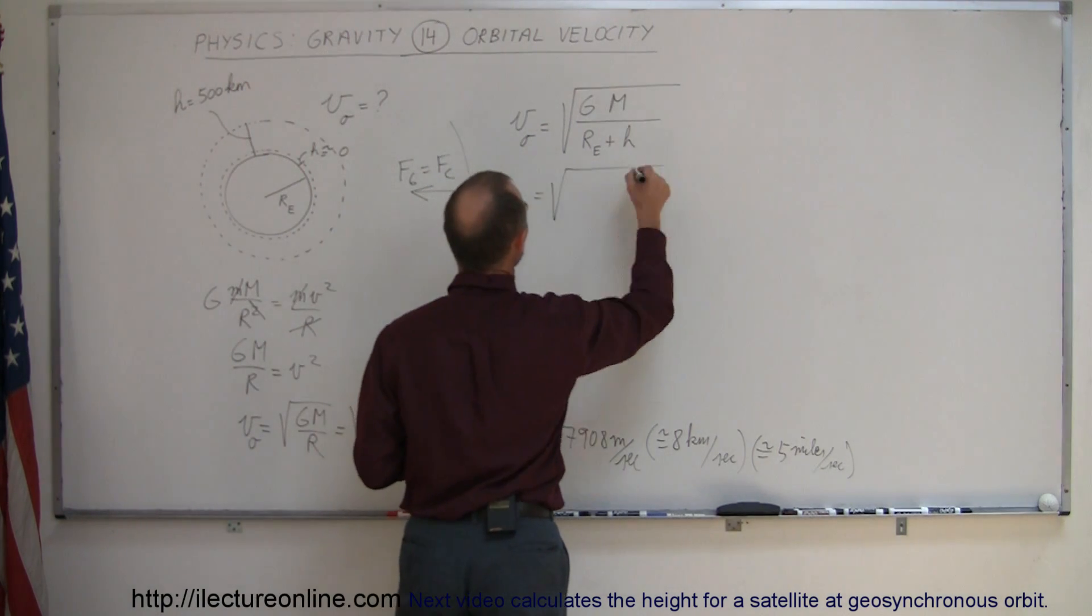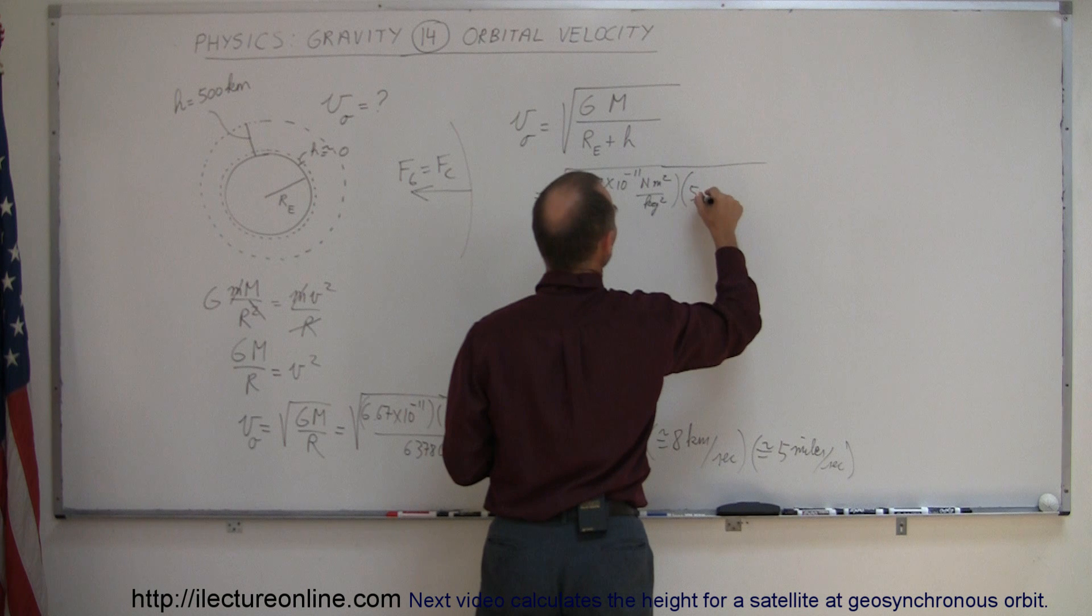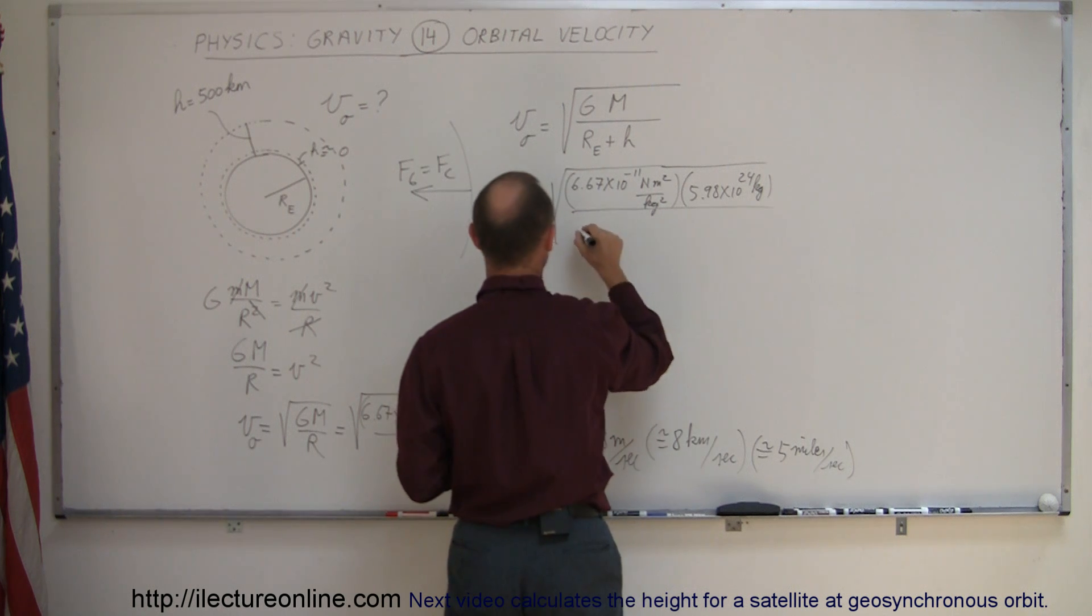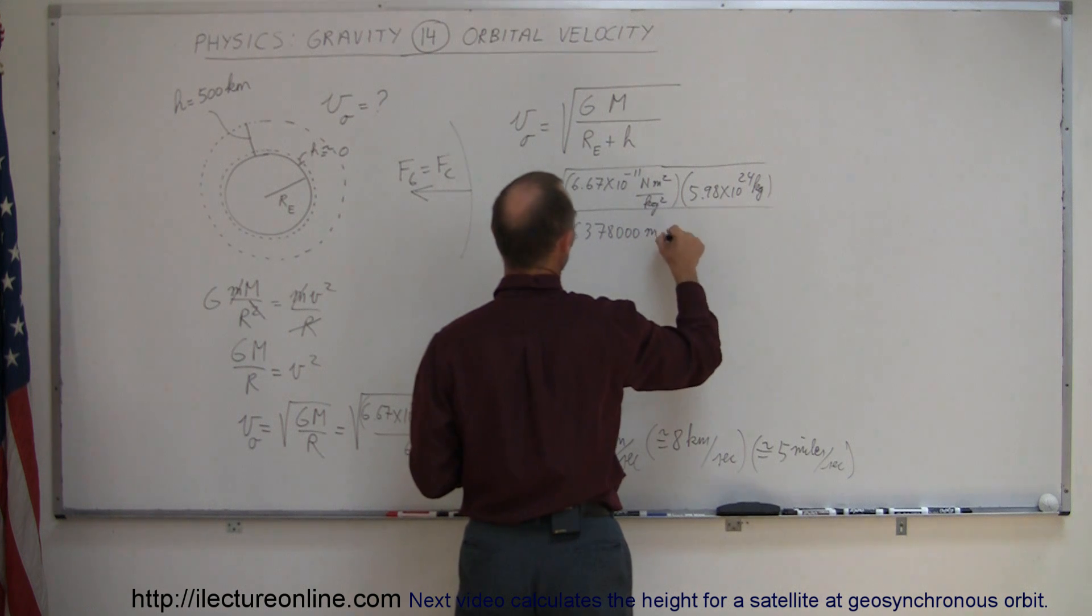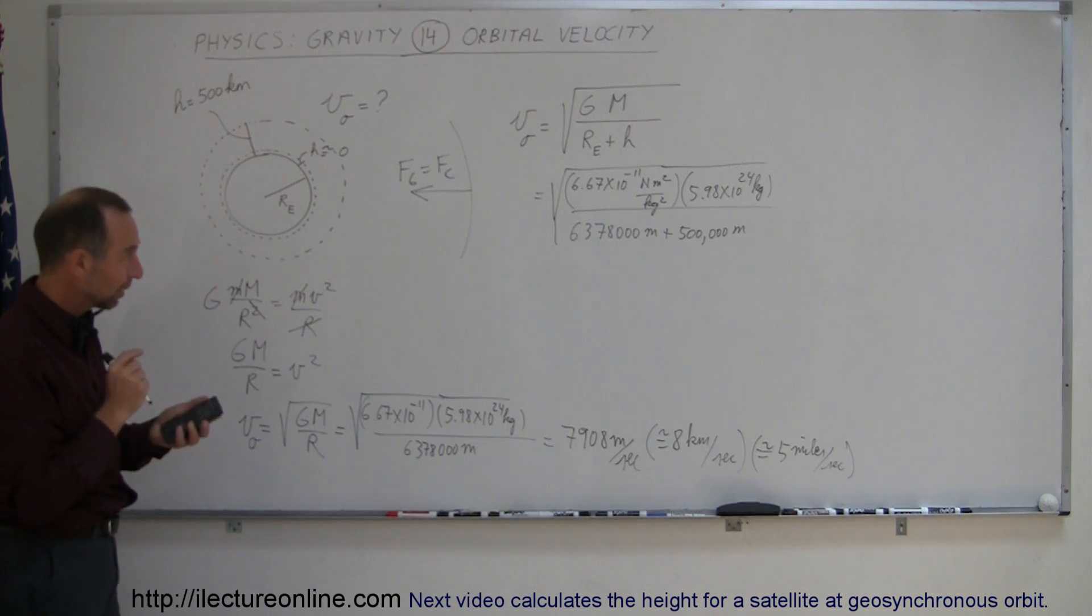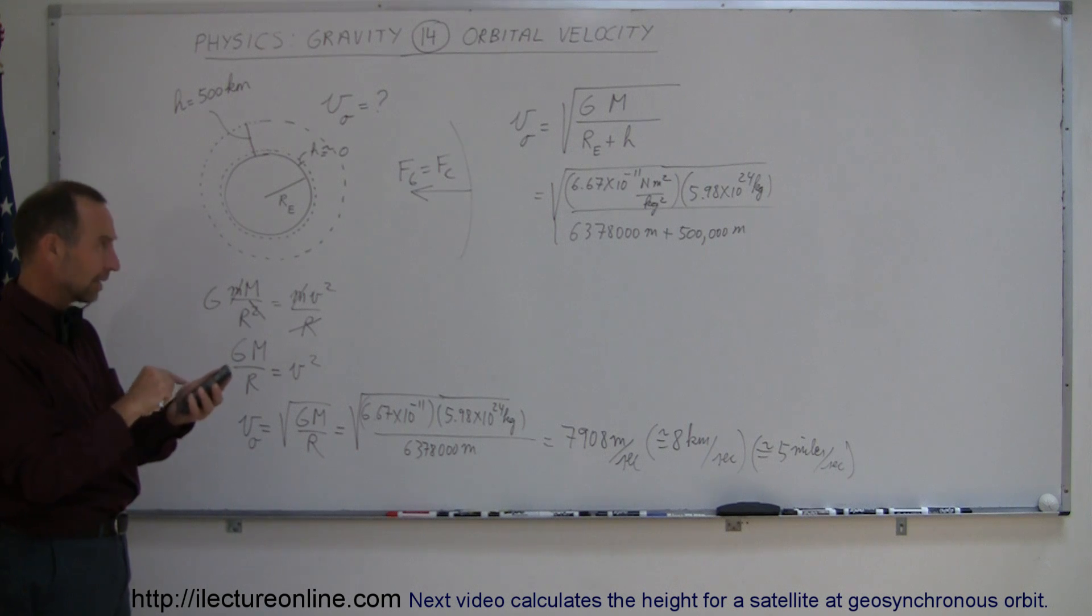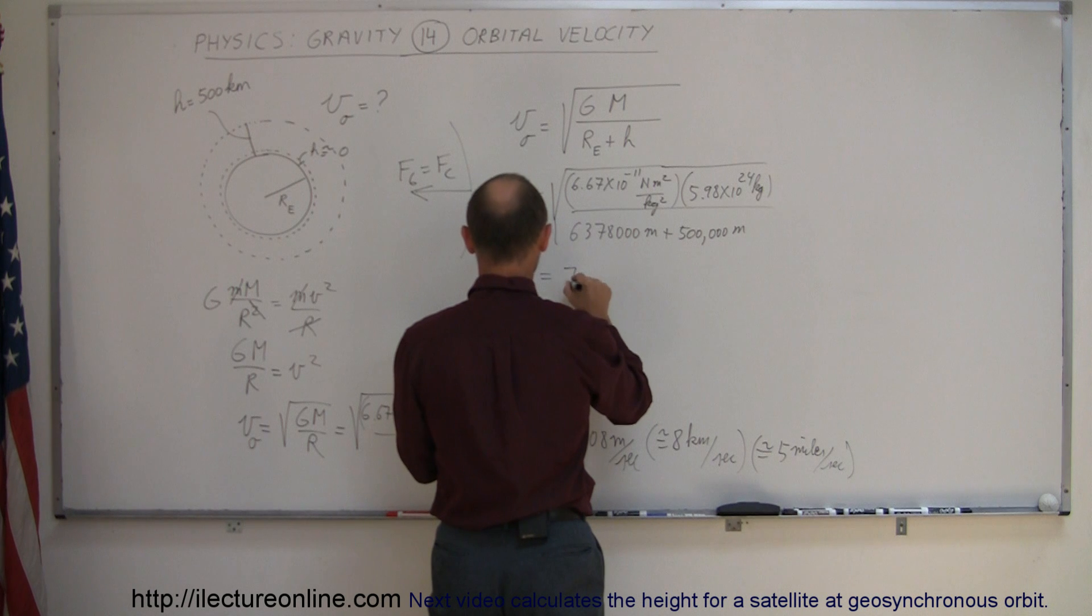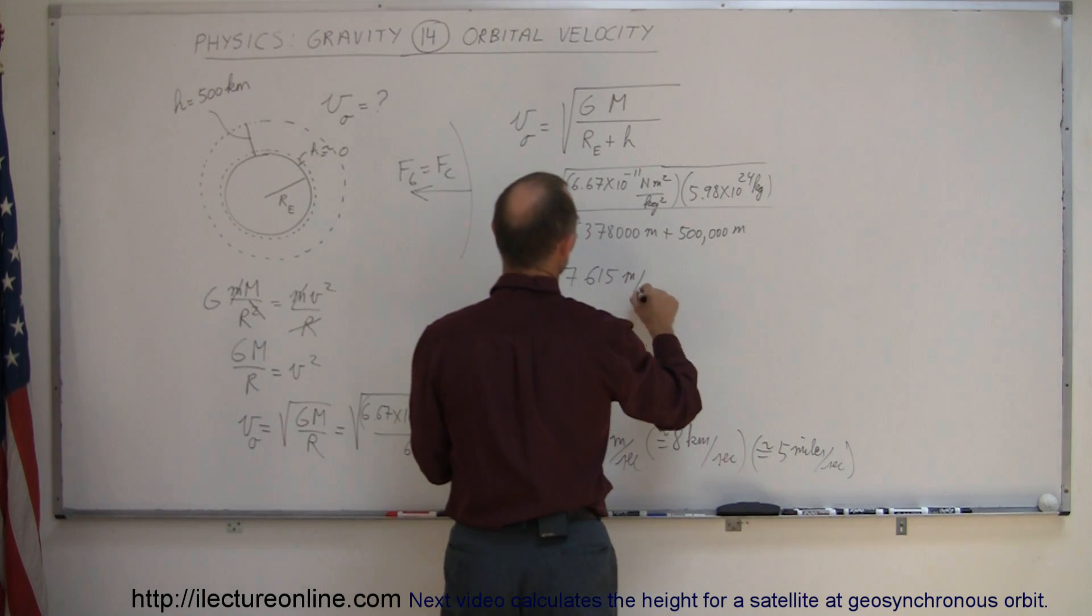This is equal to the square root of 6.67 times 10 to the minus 11 newtons meters squared per kilogram squared, times the mass of the Earth, 5.98 times 10 to the 24 kilograms, and the whole thing divided by the radius of the Earth, which is 6,378,000 meters, plus another 500,000 meters, because 500 kilometers is 500,000 meters. 6.67 e to the -11 times 5.98 e to the 24th divided by 6,878,000, and then take the square root of that. A little bit less, it would now be 7,615 meters per second.